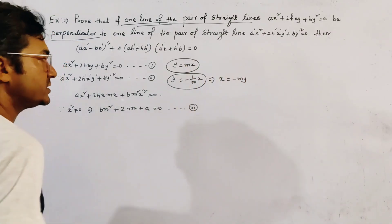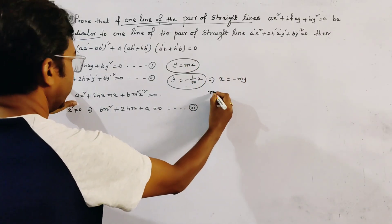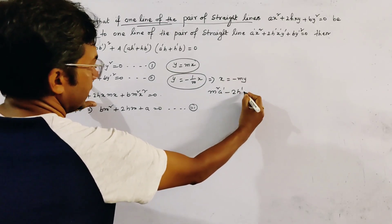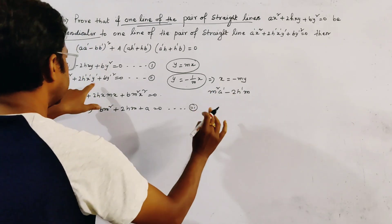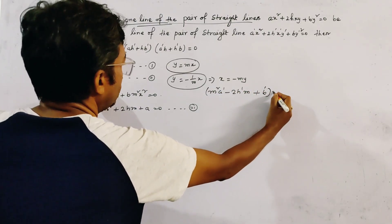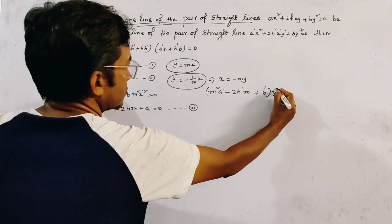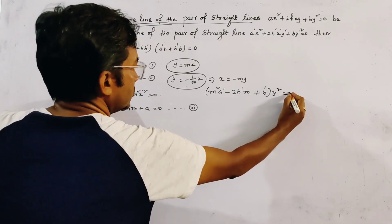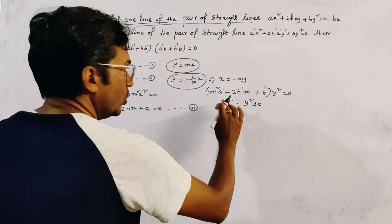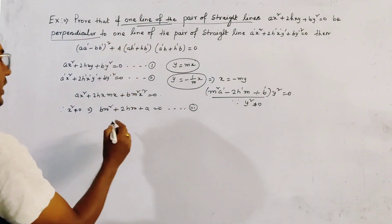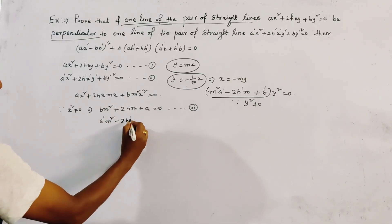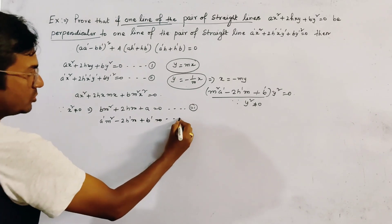From the second line, putting x = -my into equation 2, we get a'm² - 2h'm + b' = 0. Since y² ≠ 0, we write this relation as a'm² - 2h'm + b' = 0. We name this as relation number 4.